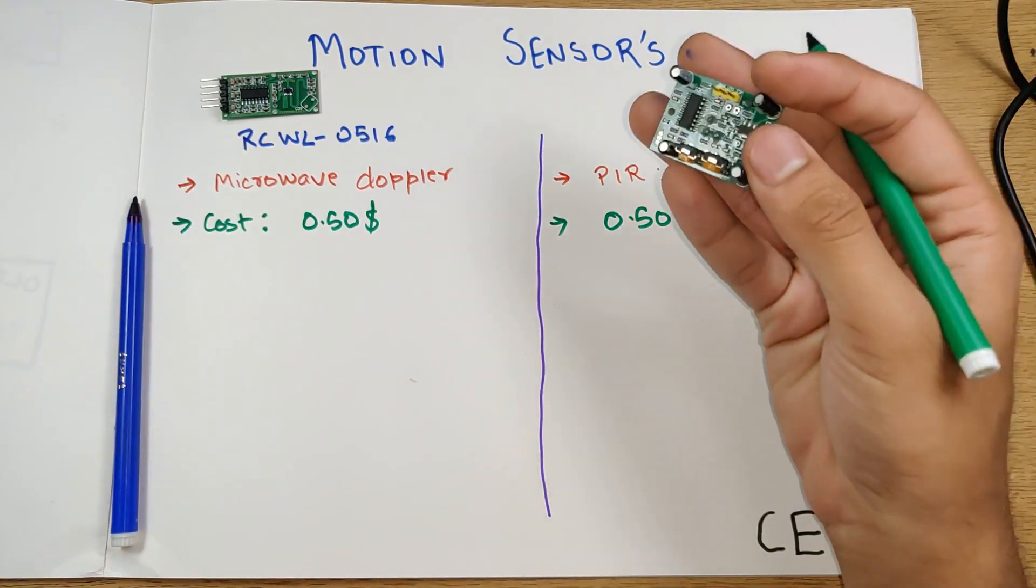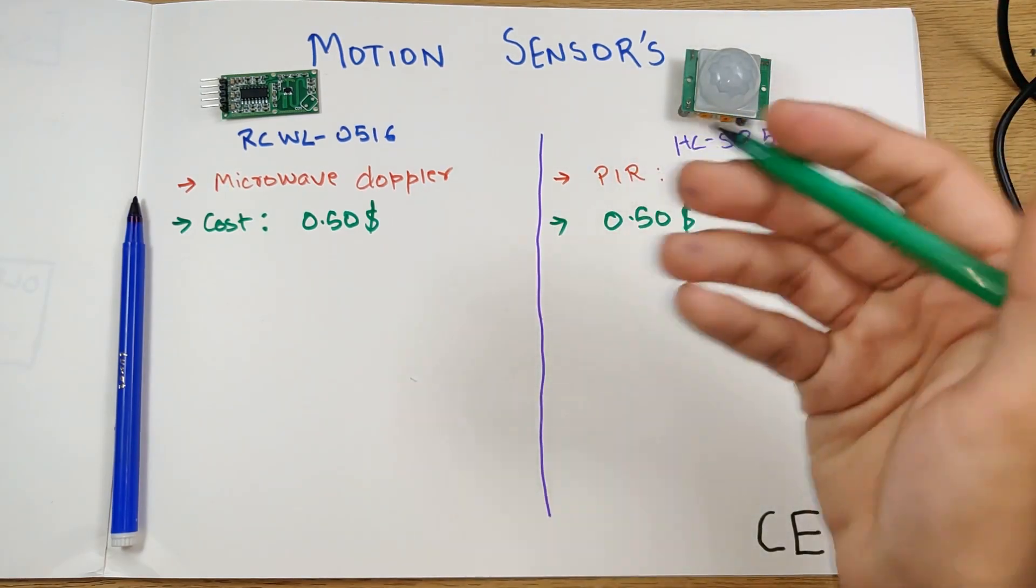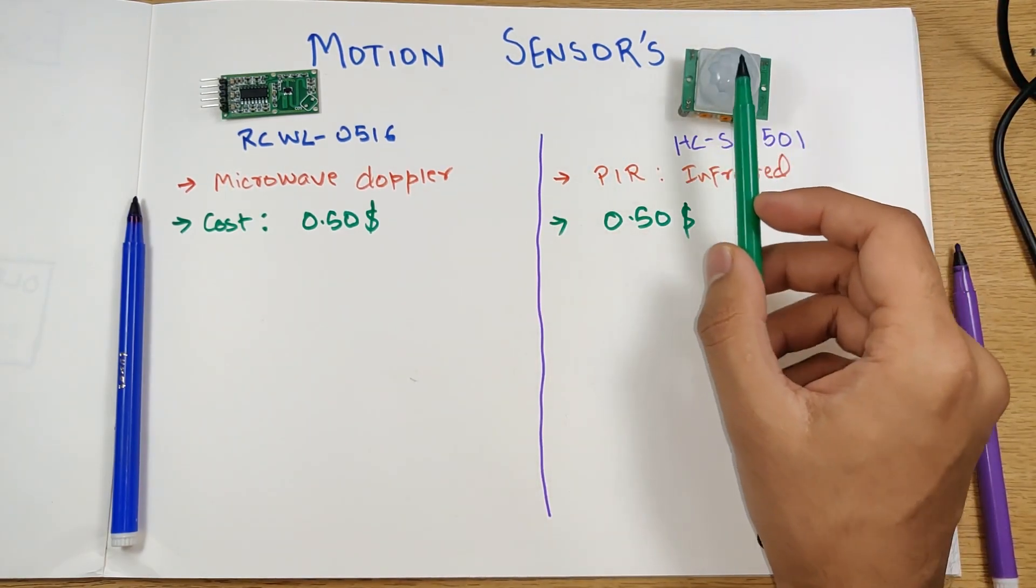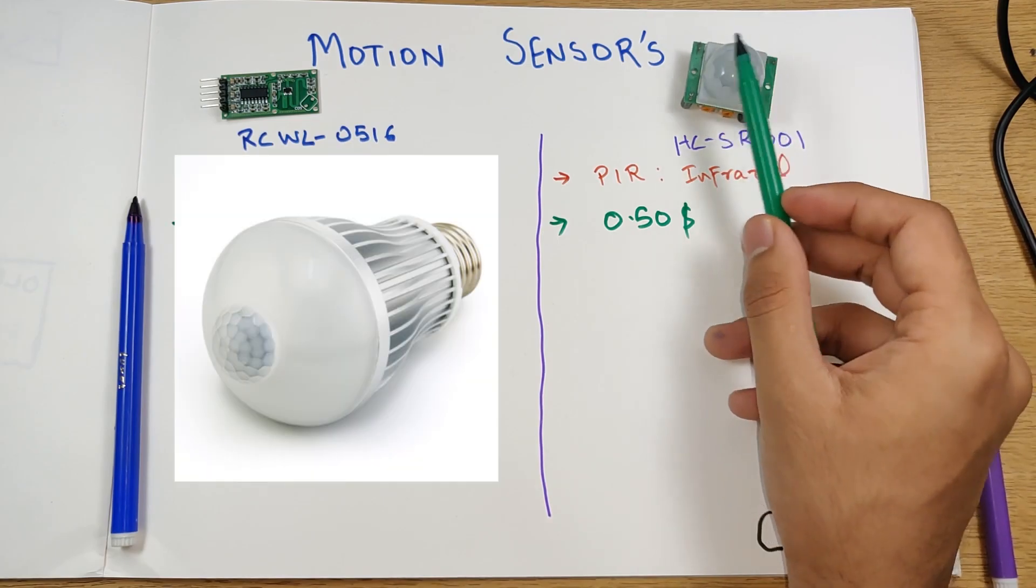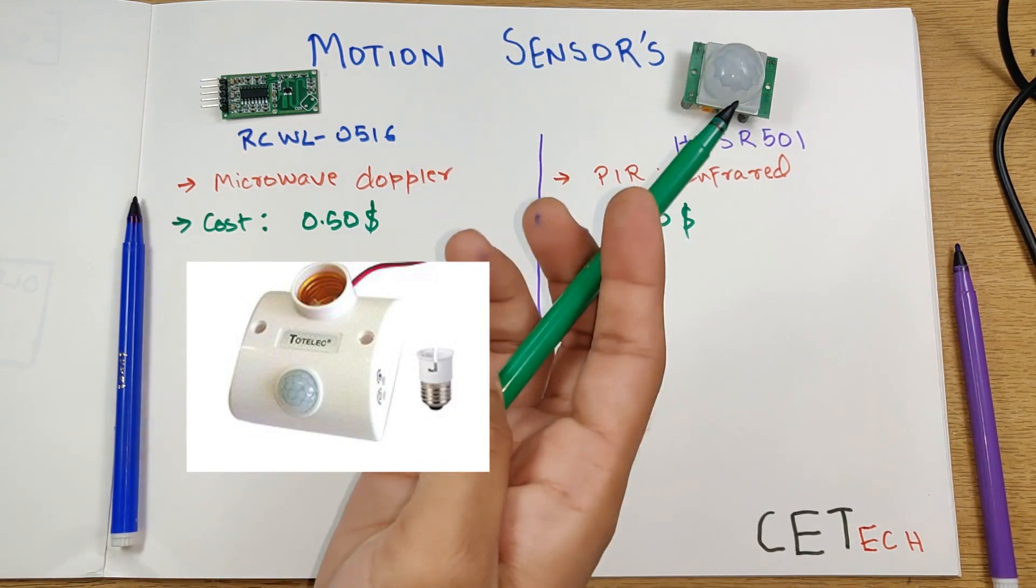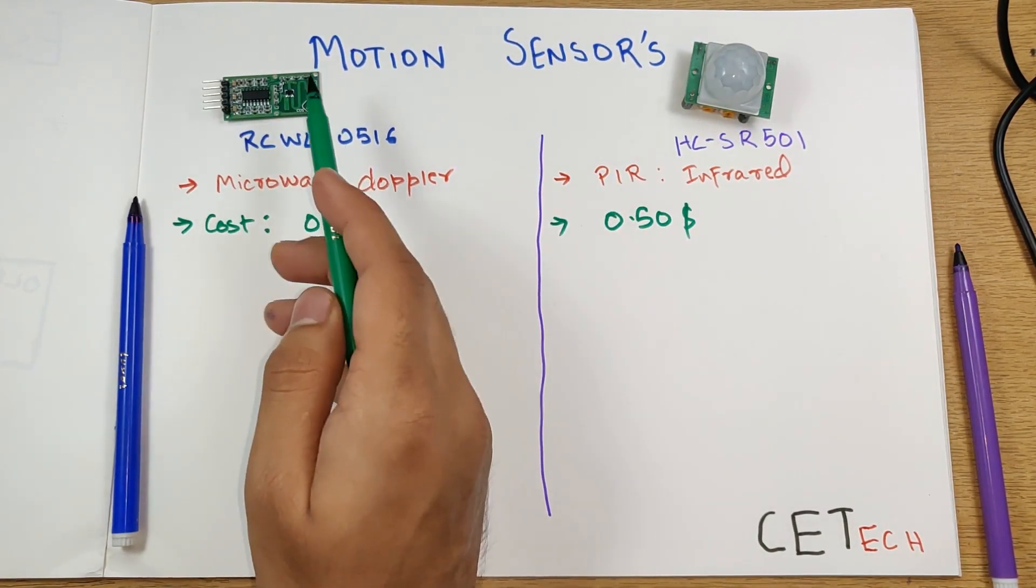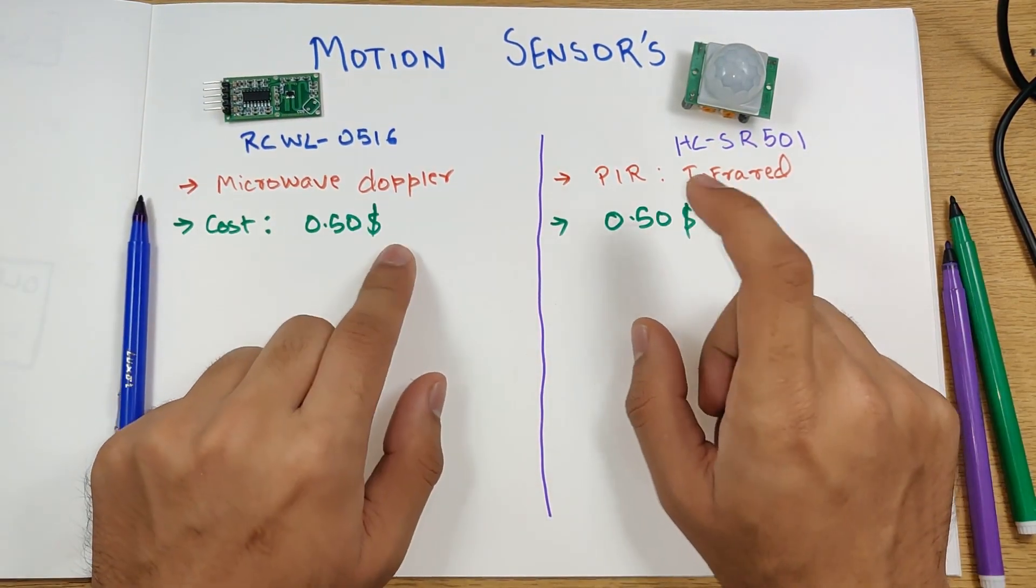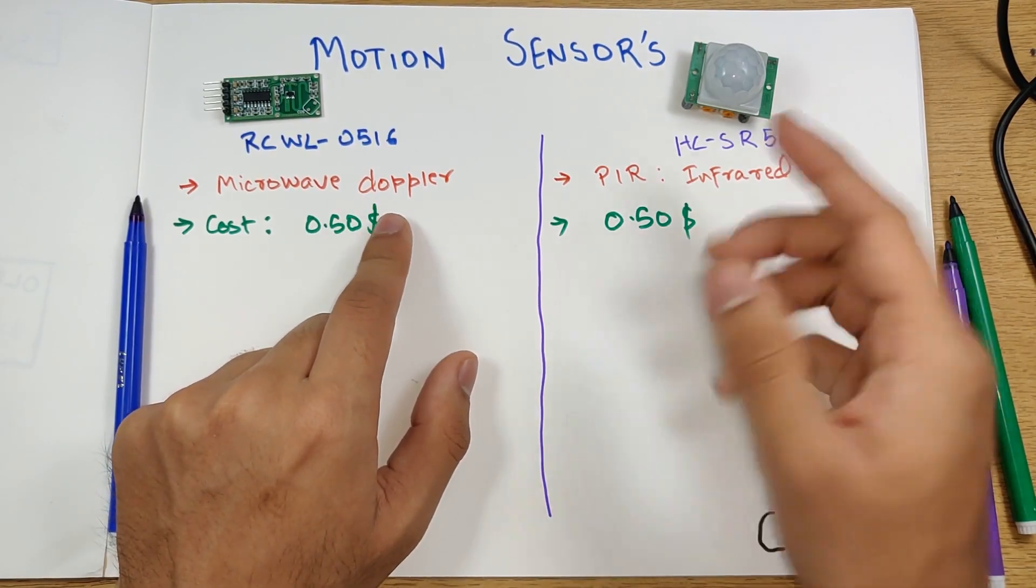These are like very cheap sensors and you must have seen this PIR type of ball on many smart bulbs these days, motion activated bulbs. This has to be in line of sight and this doesn't, we'll talk about that. Basic differences that we see is that they both work on different technologies.